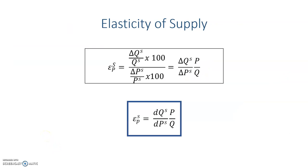Now let's look at the elasticity of supply. The elasticity of supply refers to how much the quantity varies when the price varies by one unit. The equation is: the variation in the quantity supplied divided by the variation in the price, multiplied by the price and divided by the quantity. This is the same as the derivative of the supply function with respect to the price, multiplied by the price and divided by the quantity at the point where we want to find the elasticity.